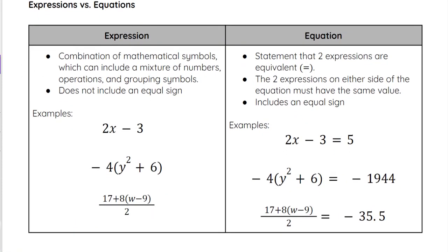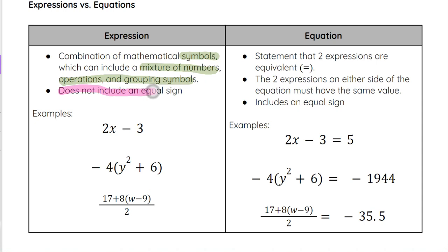An expression is a combination of mathematical symbols, which can include a mixture of numbers, operations, and grouping symbols, and it does not include an equal sign. So these are three examples of expressions: 2x minus 3, negative 4 times y squared plus 6, and 17 plus 8 times w minus 9 all over 2.